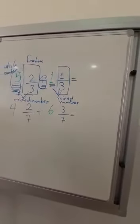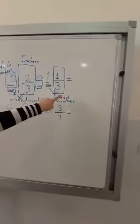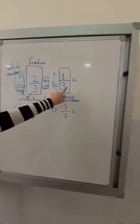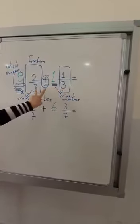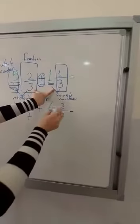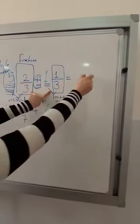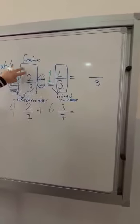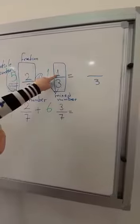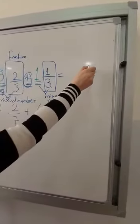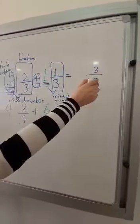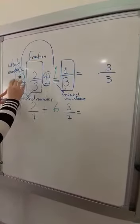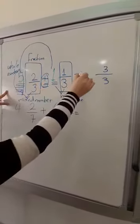At first, we will add the two fractions. Here we have the same denominator — three — so we keep the same denominator: three. Then we add the numerators: two plus one equals three. After that, we add the whole numbers: five plus one equals six.